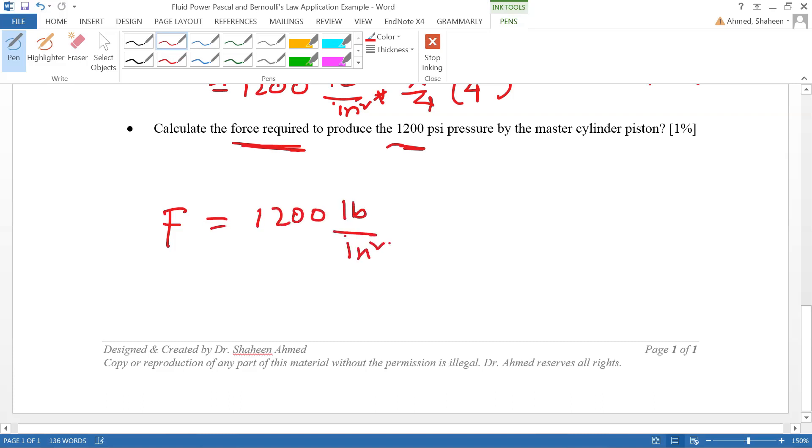The force would be 1200 psi, pounds per square inch, times the cross-sectional area of the master cylinder, π/4 times d squared. If we calculate that, I get 530 pounds.